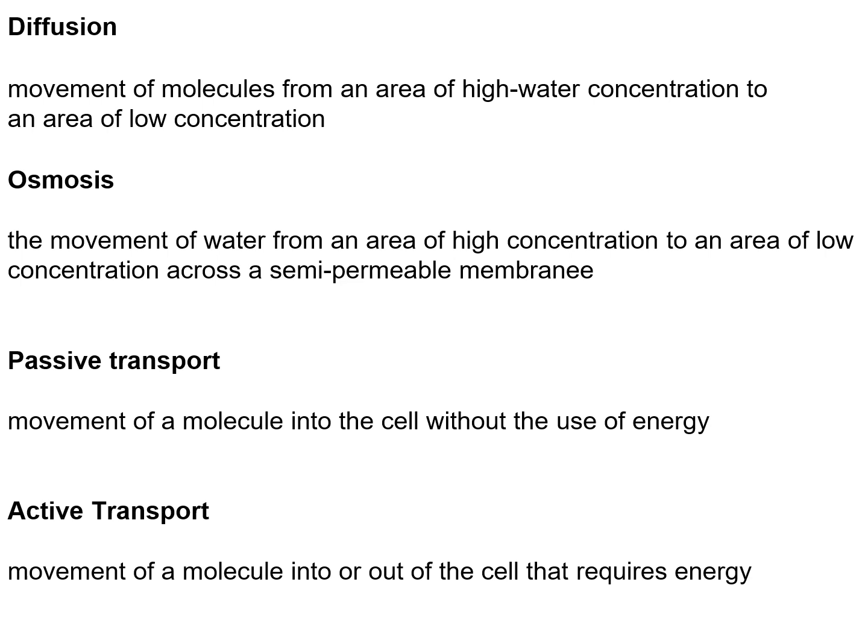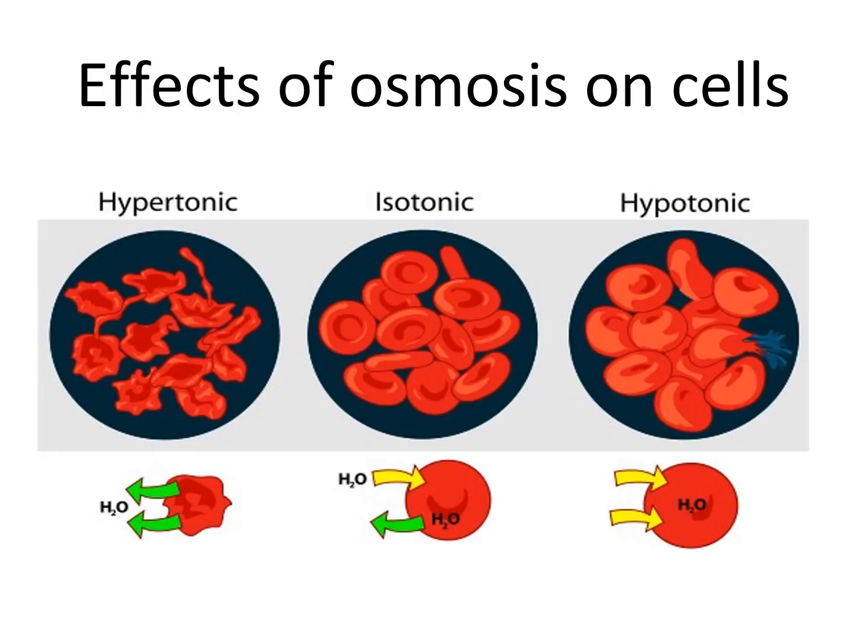Diffusion is the movement of molecules from an area of high concentration to an area of low concentration. Osmosis is the movement of water from an area of high concentration to an area of low concentration across a semi-permeable membrane. Passive transport is the movement of a molecule into the cell without the use of energy. Active transport is the movement of a molecule into or out of the cell which requires energy.